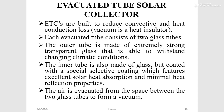Evacuated tube solar collectors are built to reduce convective and conductive heat loss, because heat cannot transfer through conduction or convection in a vacuum — conduction and convection both need a medium for transfer. Vacuum can therefore be used as a good heat insulator, which is the main principle behind the evacuated tube solar collector's advantages.